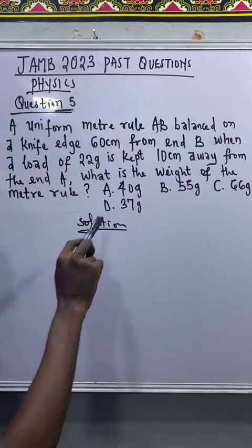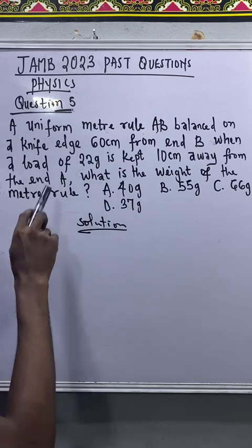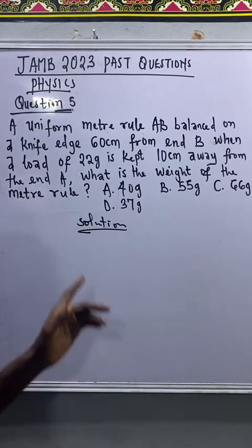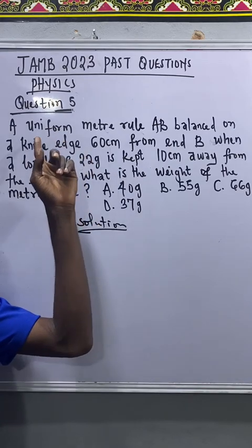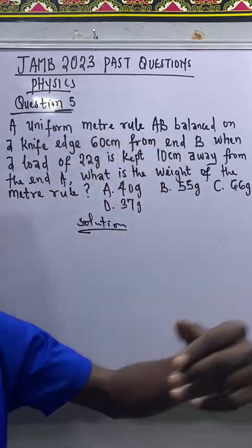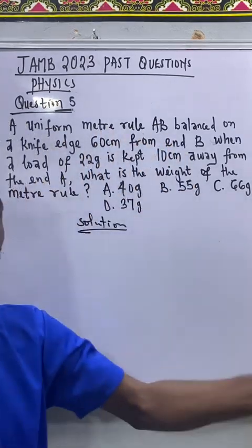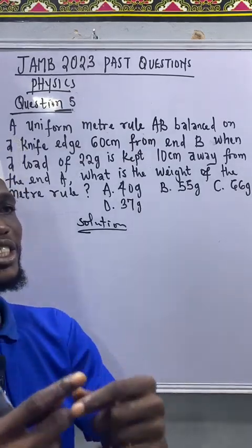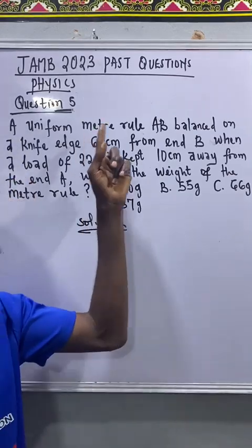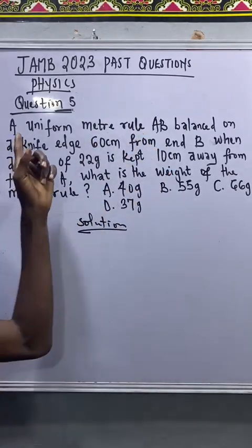What is the weight of the meter rule? Let's come with the solution now. First of all, when they say meter rule, a metal rule is an instrument for measuring length and it is 100 centimeter long. 100 centimeter make one meter, that's why we call it meter rule.